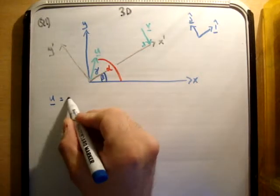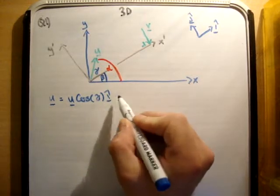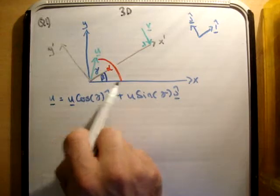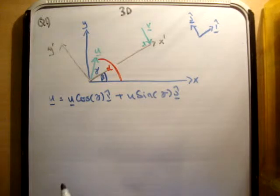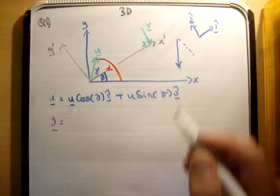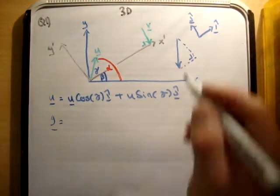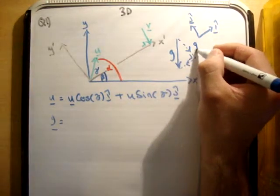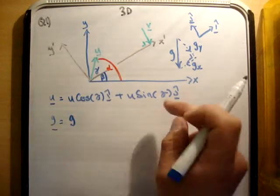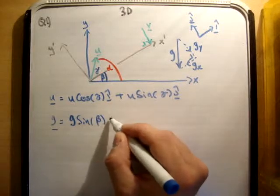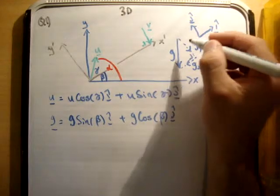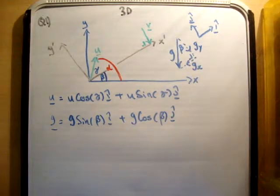So if we resolve u, we get u equals u cos gamma i hat plus u sine gamma j hat. The book says alpha, but it's the same thing - it just depends whether you take it from the x axis or x prime. If we resolve the gravity vector, we get g equals g sine beta i hat plus g cosine beta j hat. Because this angle bisects beta at a right angle, they are at the same angle.